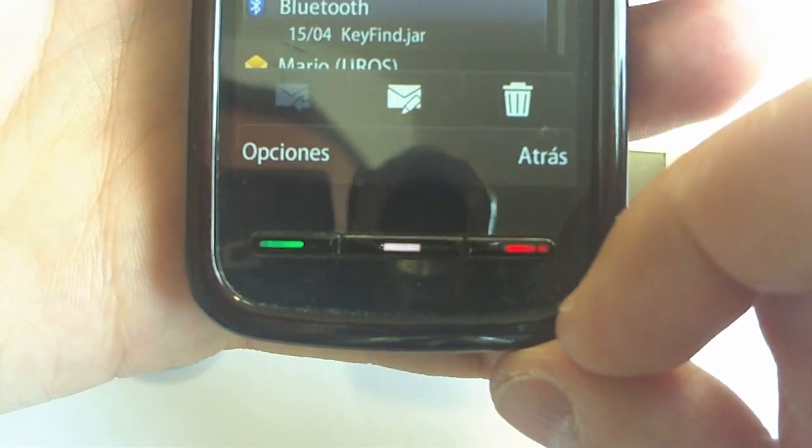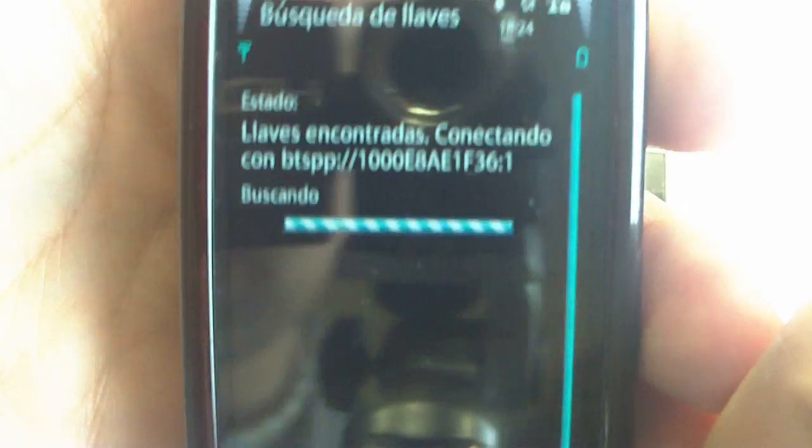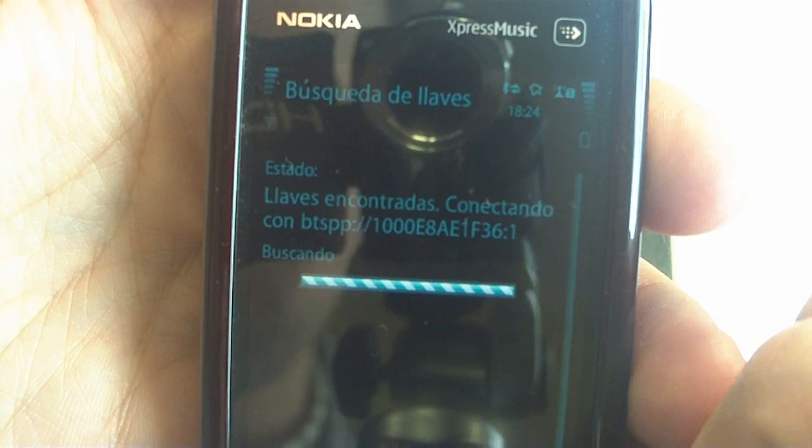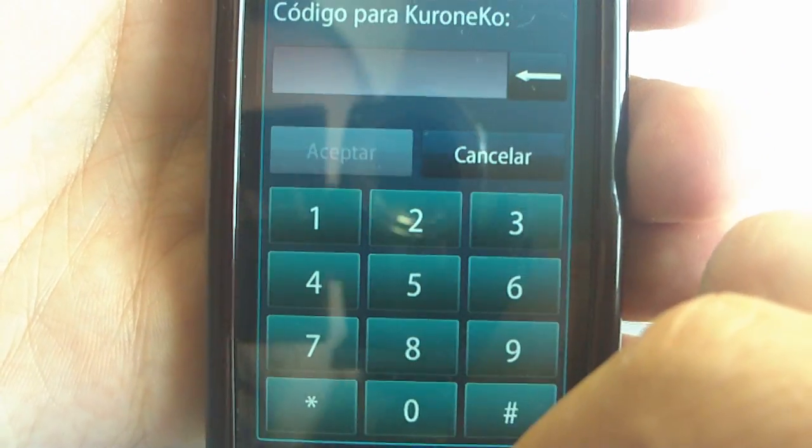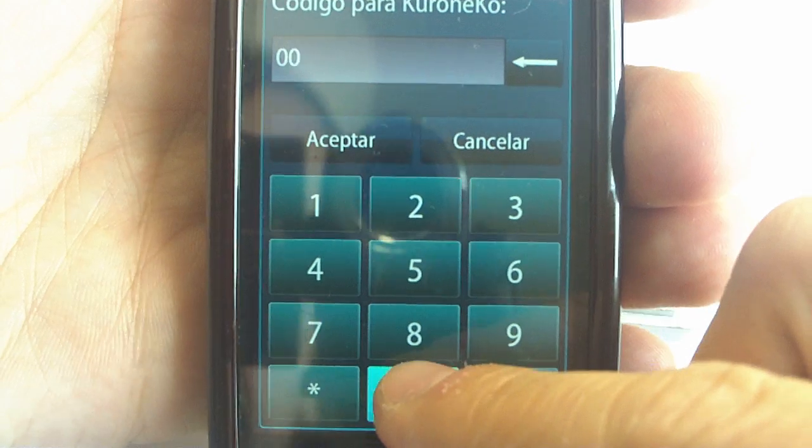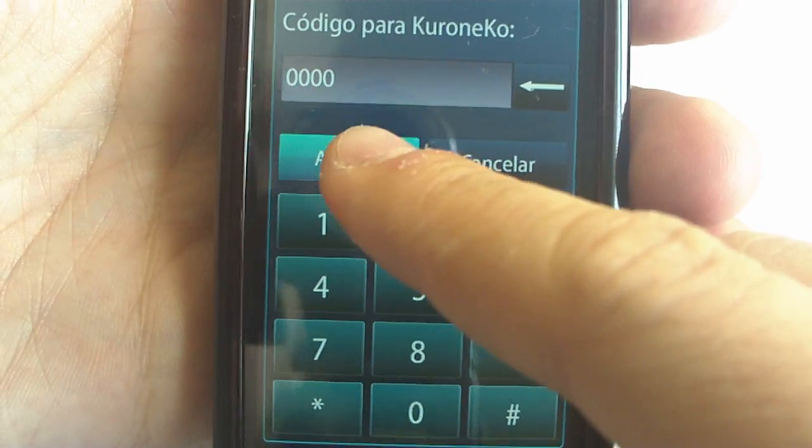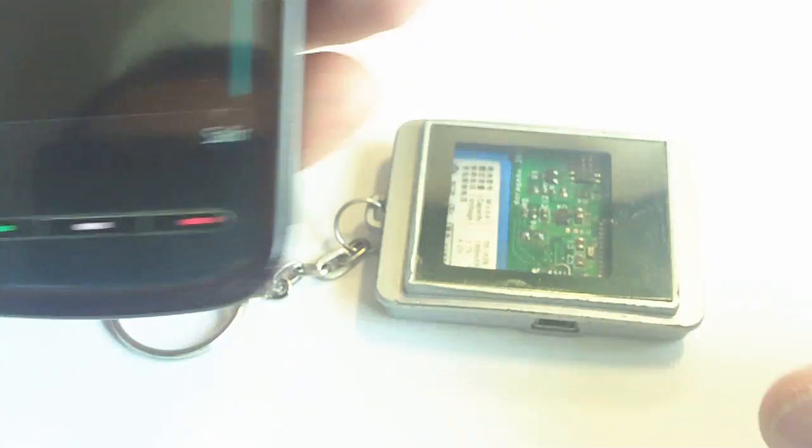Enable Bluetooth. Ok, it's now searching the keys. It has found them. And now I have to enter the pin. And voila!